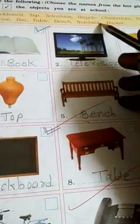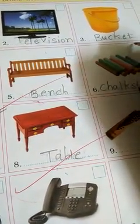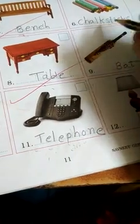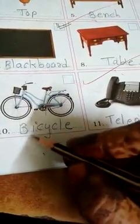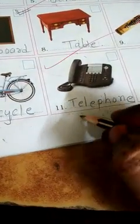Bench — B-E-N-C-H. Notebook. Basket — B-A-S-K-E-T. Television — T-E-L-E-V-I-S-I-O-N. Basket — B-U-C-K-E-T. Top — T-O-P. Bench. Chalkstick — C-H-A-L-K-S-T-I-C-K. Blackboard — B-L-A-C-K-B-O-A-R-D. Table — T-A-B-L-E. Bat — B-A-T. Bicycle — B-I-C-Y-C-L-E.